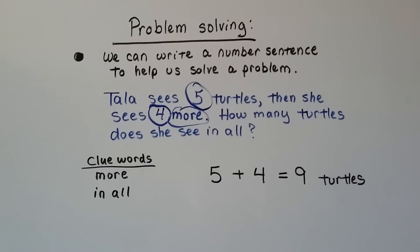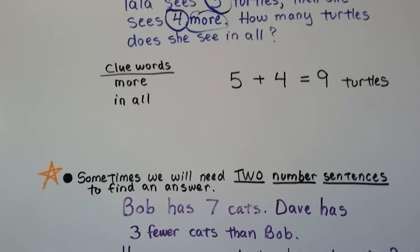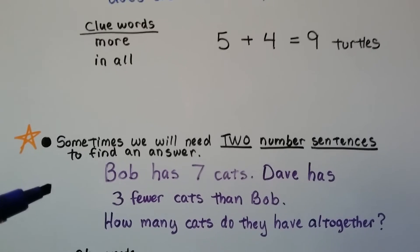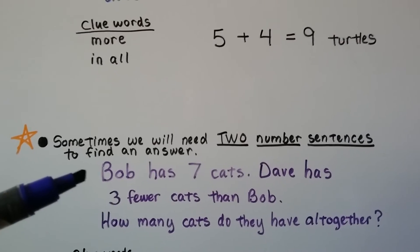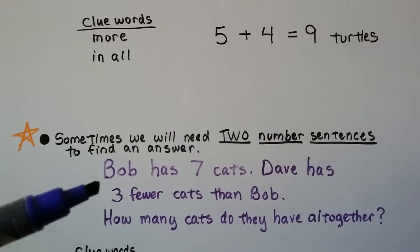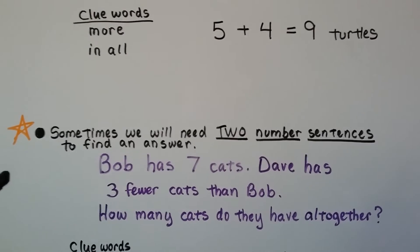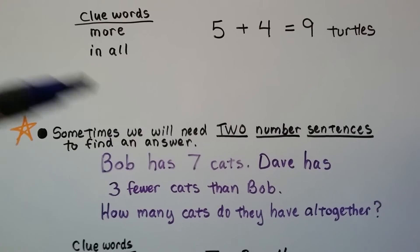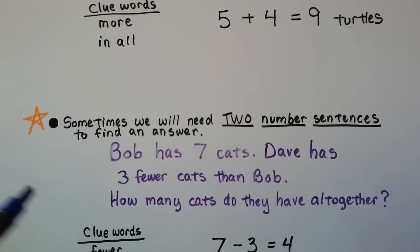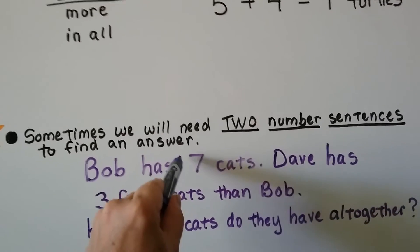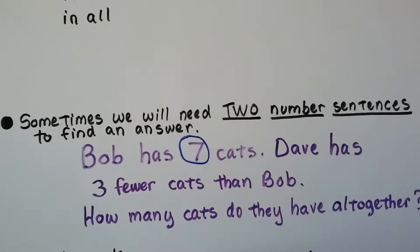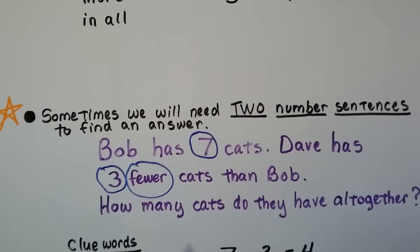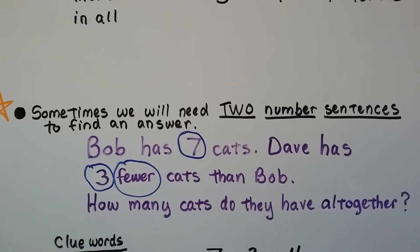Let's try something a little bit harder. Sometimes we'll need to use two number sentences to find an answer. Bob has seven cats. Dave has three fewer cats. The first thing we need to do is circle our important words and write a number sentence. Bob has seven cats, Dave has three fewer. Because he has three fewer, we know it's going to be a subtraction sentence.